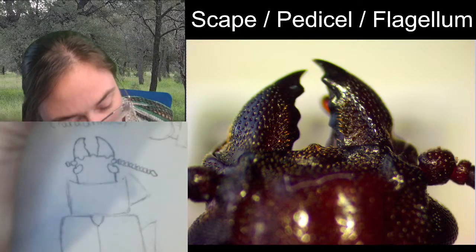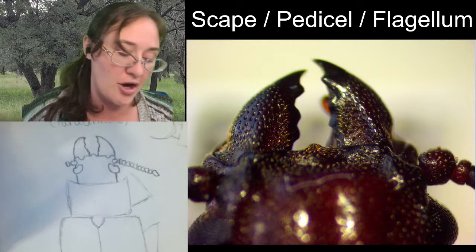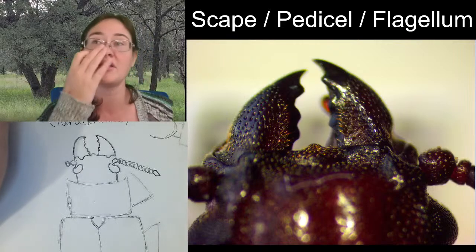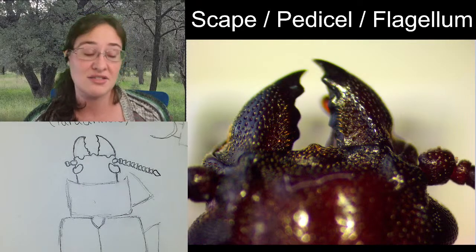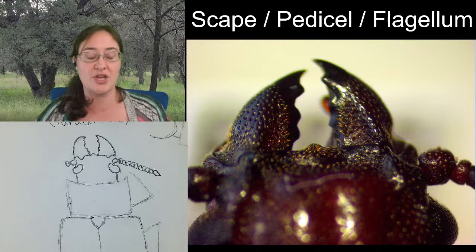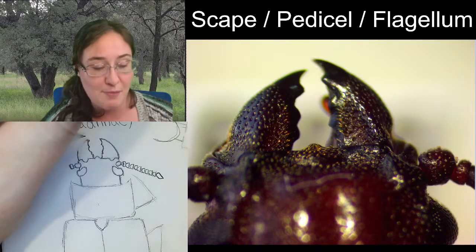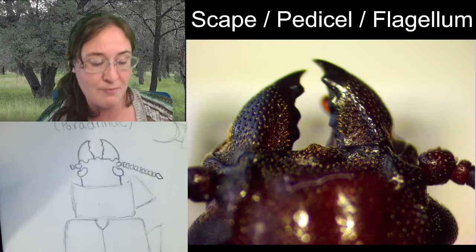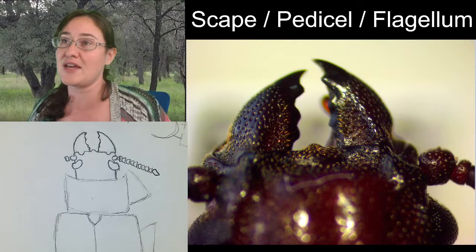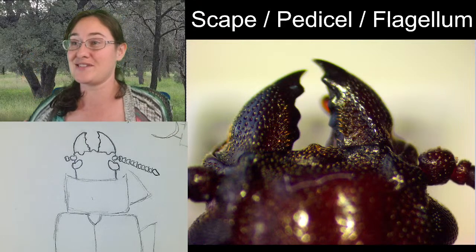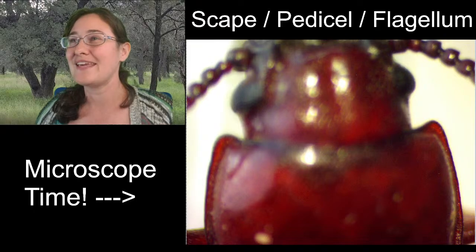As a grub, longhorn beetles are living in logs and boring in trees. Some of them bore in living trees and some bore in already dead and dying trees. Some bore in decaying logs - it just depends on which species or genus you're looking at. There are even longhorn beetles down in Arizona, Texas, and New Mexico that bore in cacti. If there's a plant they can bore into and feed off of its nutrients, they're likely going to be there.